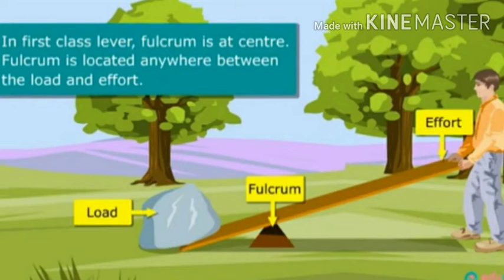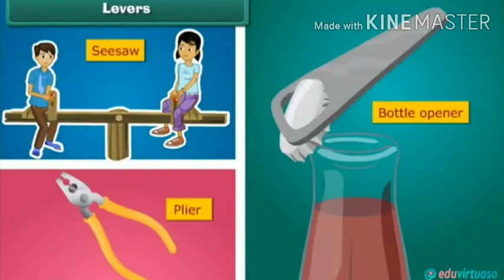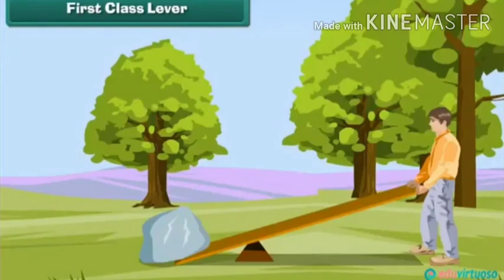We can change the position of the fulcrum to both ends. You will see all the levers. There are three levers. The first one is a lever — first class lever.